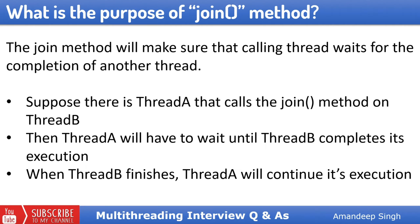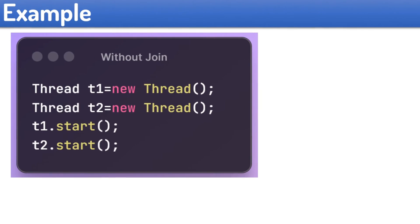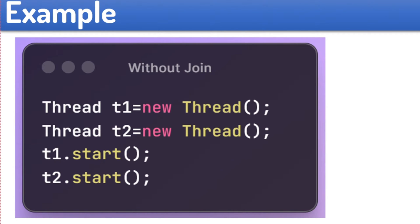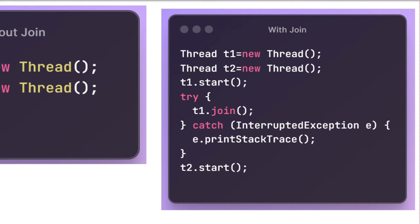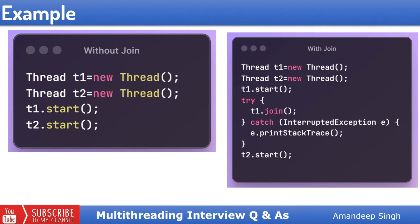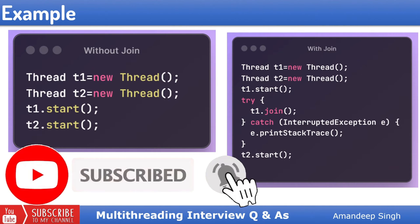Let us try to understand this better with a code example. In this code, we are not using join. Main thread will be executing this whole code, so overall three threads are in execution. All these three threads will be executed in parallel because we have not called join on any of the threads. Now in this code, again we have three threads. But after starting t1, main thread called t1.join. At this point, the execution of main thread will be blocked — it will have to wait for t1's completion. Once t1 completes its execution, then further statements will be executed by the main thread. So to summarize, we can use join to synchronize the progress of multiple threads.